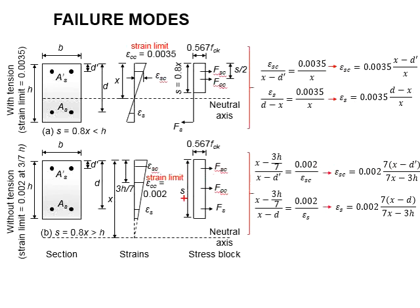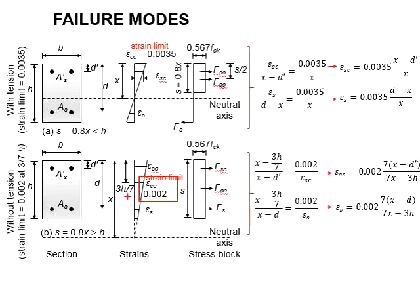Next, we look at epsilon_s. The triangles of interest are these two. The strength limit 0.002 is in comparison with this height, which is x minus 3H/7, as shown here.